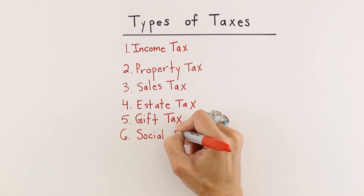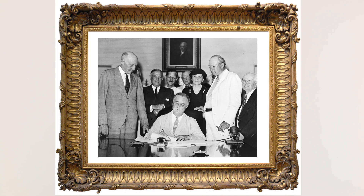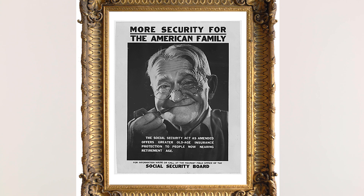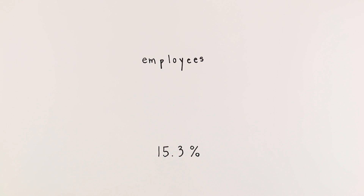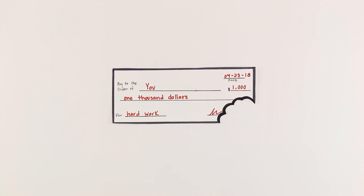The sixth type of tax is the social security tax. Established in 1935, social security provides income to elderly people and people who are permanently disabled. It is funded by a 15.3% tax that is paid by employees and their employers. This is another tax that is taken directly out of your paycheck.